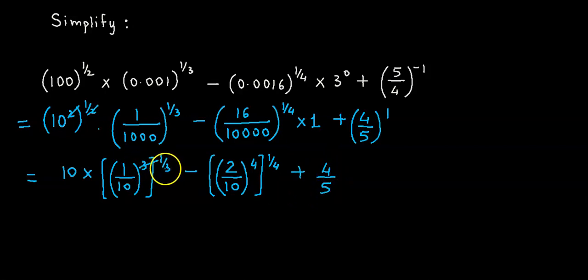Now here again 3 cancels out with this 3 over here, so we have 10 into 1 over 10 minus - now the 4 cancels out with this 4, so we have minus 2 over 10 plus 4 by 5.